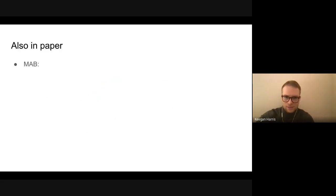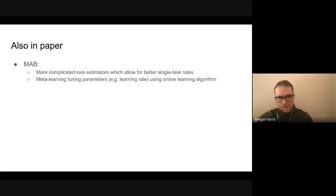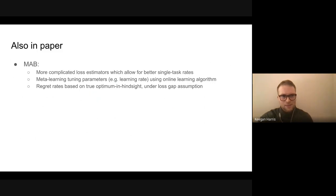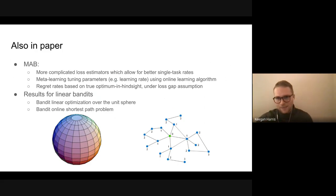Other results in the paper: you don't need to use EXP3 specifically - for the best rates you should use an algorithm with a more complicated loss estimator that gives better single-task rates. You can also meta-learn the tuning parameters. We also have results for linear bandits - specifically meta-learning for bandit linear optimization over the unit sphere and bandit online shortest path problems, though the notion of task similarity in these settings is much more complicated.